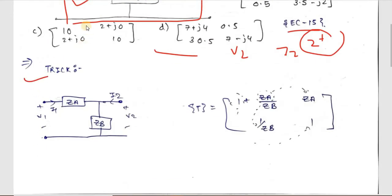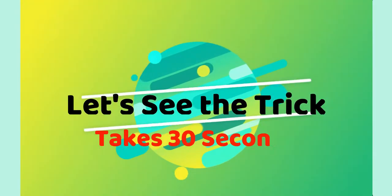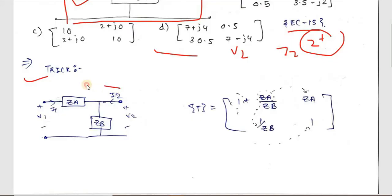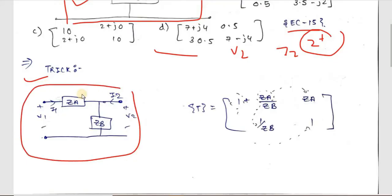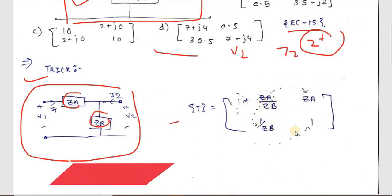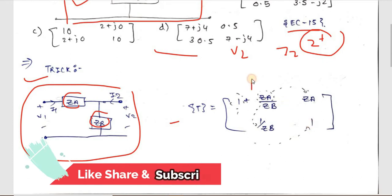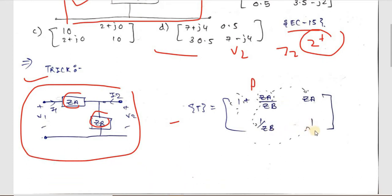For a network with one impedance ZA in series and one impedance ZB in shunt, you can write the ABCD parameters directly as: A = 1 + ZA/ZB, B = ZA, C = 1/ZB, and D = 1.